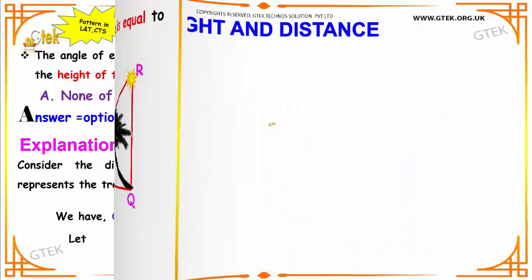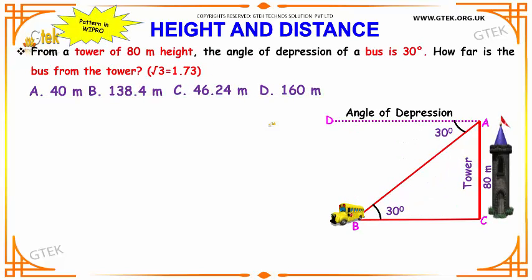Let us see our next interesting example. We have a tower which is 80 meters high, and the angle of depression of a bus is given to be 30 degrees. How far will be the bus from the tower? That is, you have to find the distance BC.